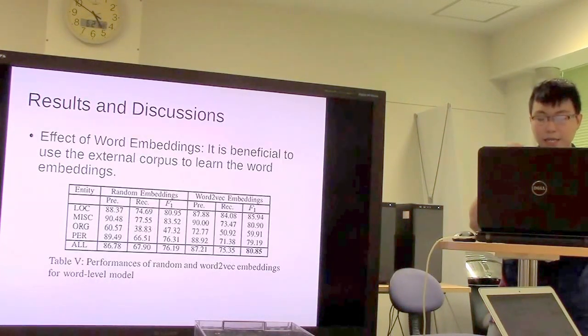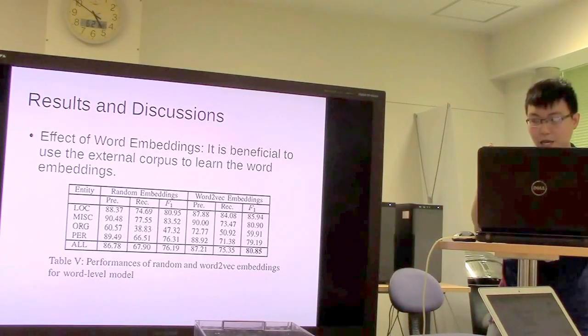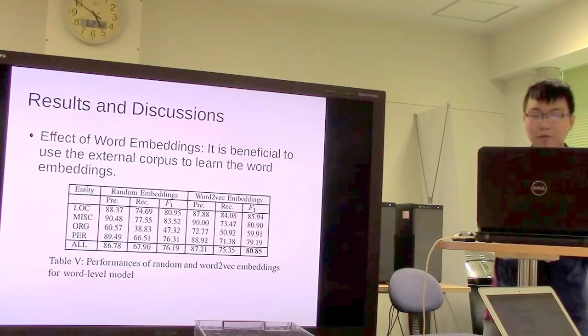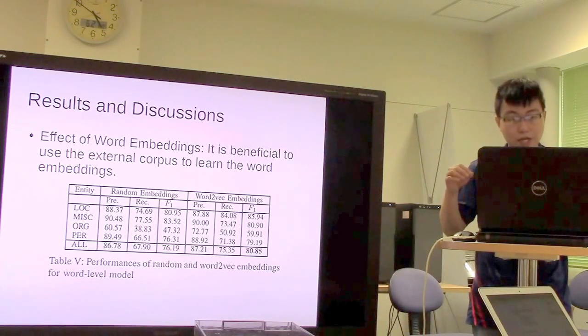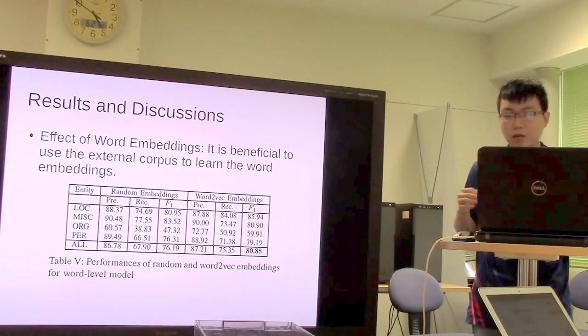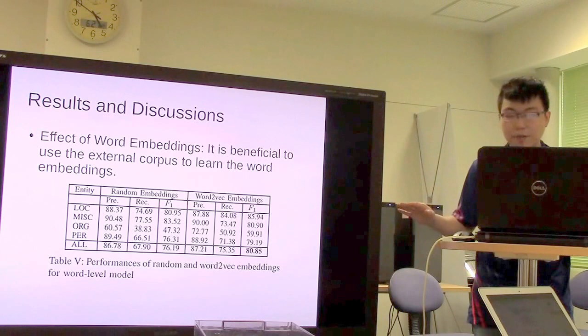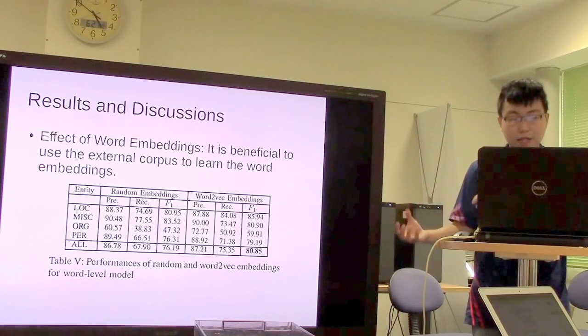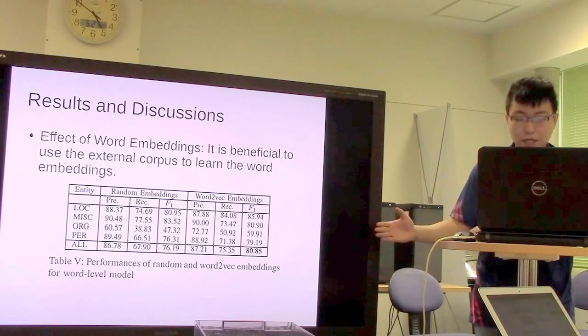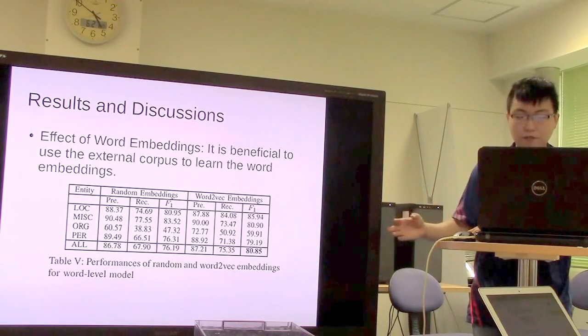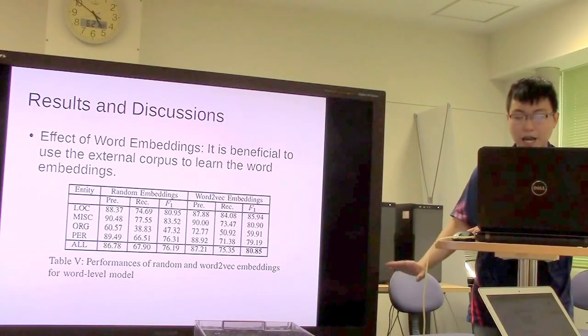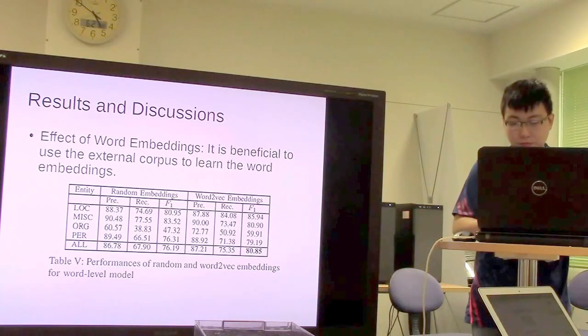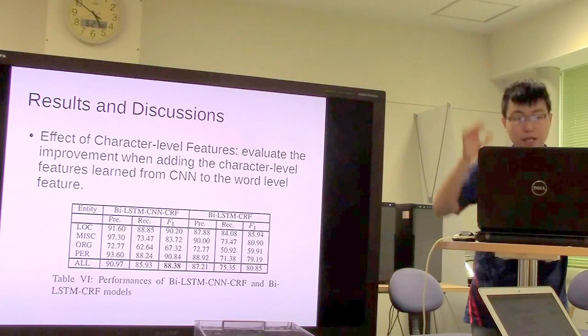In the second experiment, they investigate the effect of word embeddings, so they use an external corpus to learn the word embeddings. This table shows that the Word2Vec embedding achieves a higher score than random embedding.